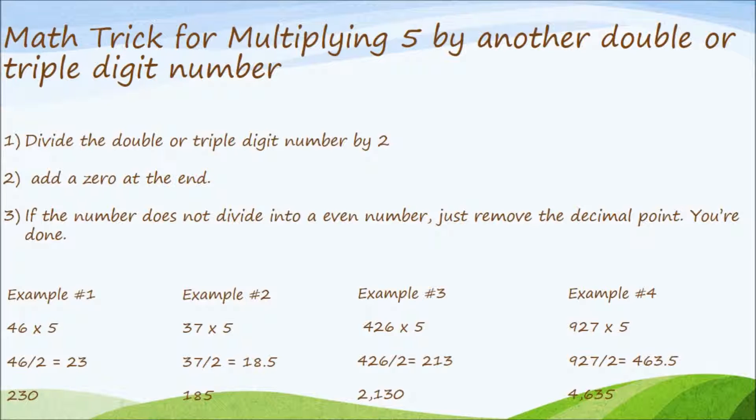Next, we have 927 times 5. Let's divide 927 by 2, which is equal to 463.5. Final answer, remove the decimal. We have 4635.